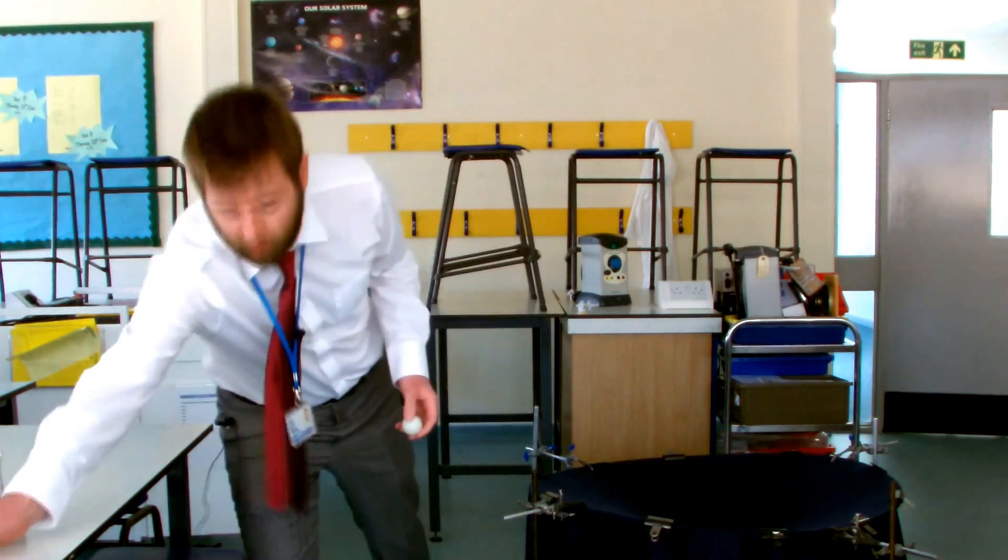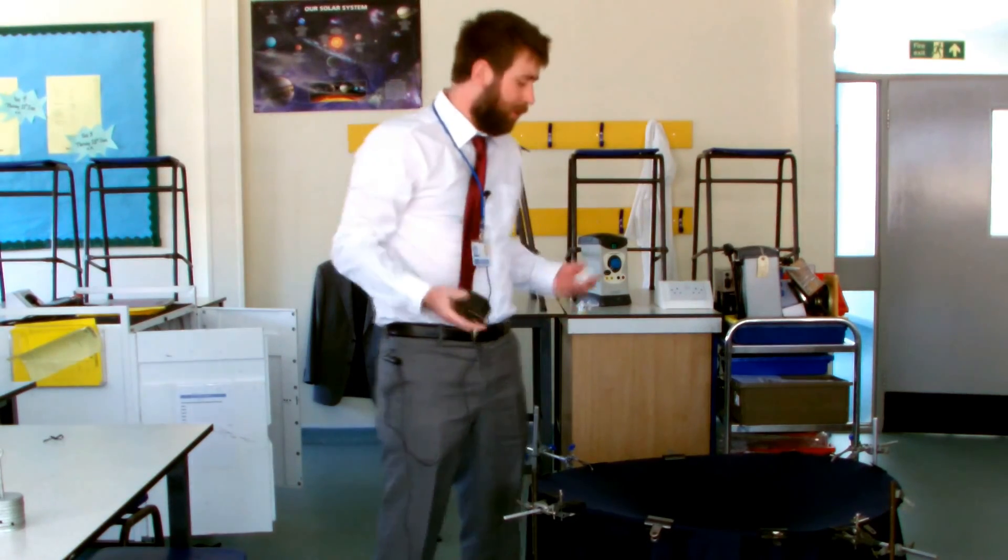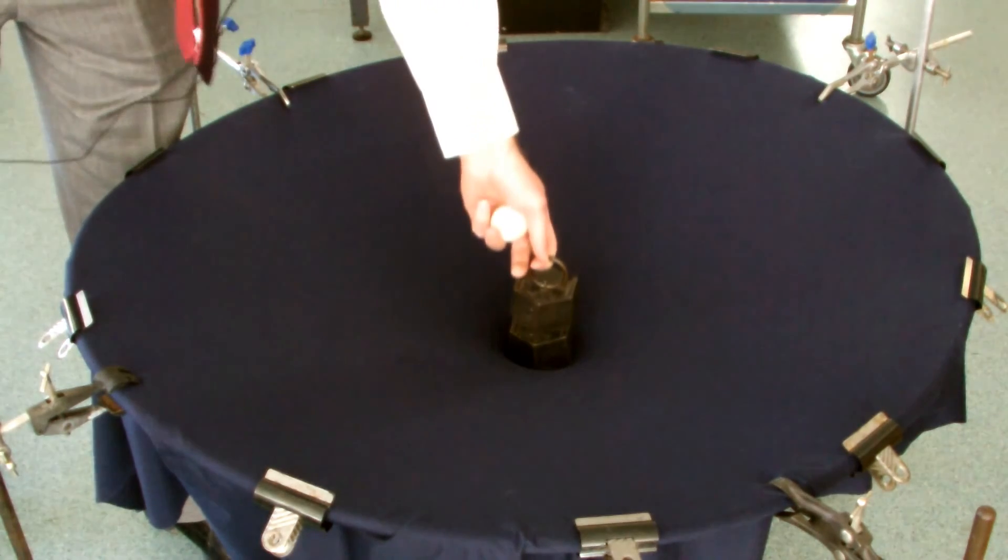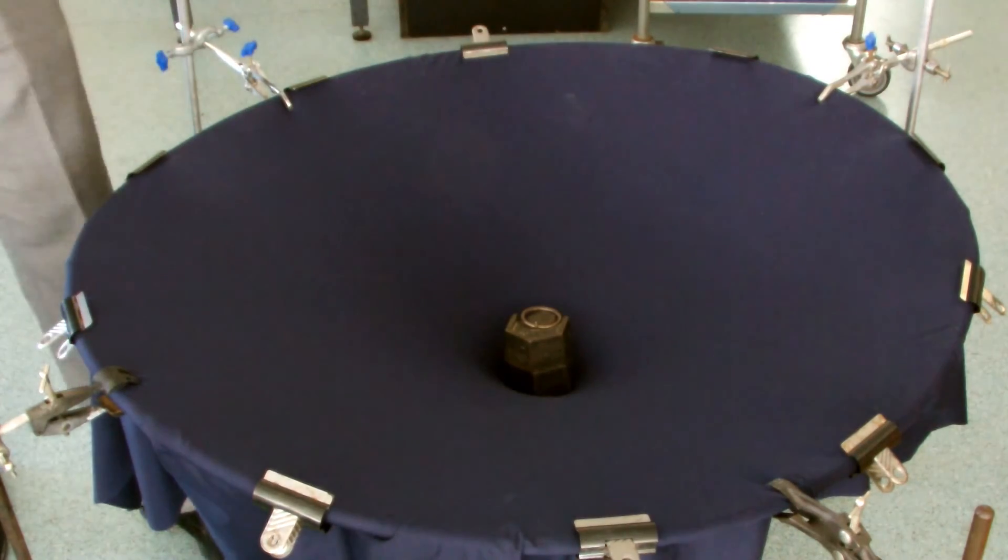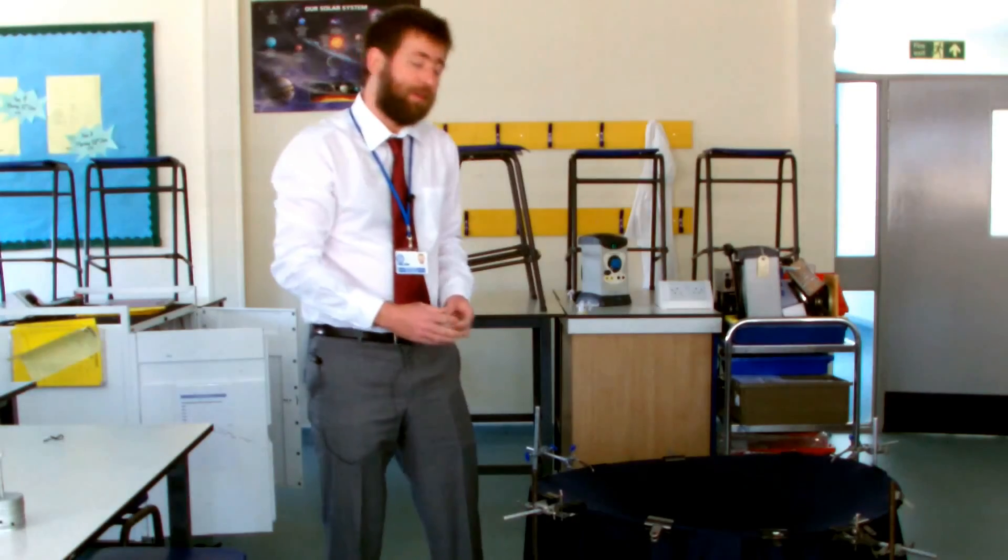I'm going to talk about a different star now, or a different solar system, because I'm going to add more mass. I'm going to talk about a star which has twice the mass of our sun. Now I have two kilograms in the centre of my gravity plane, and that is a model of a larger star.